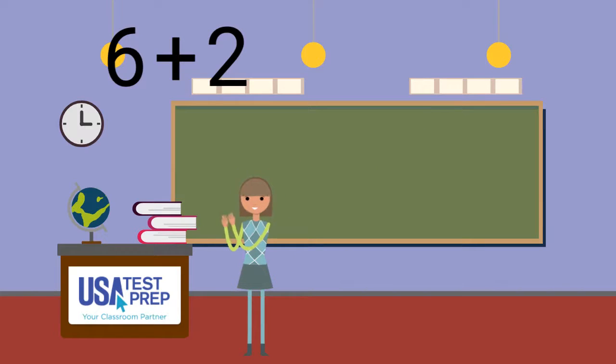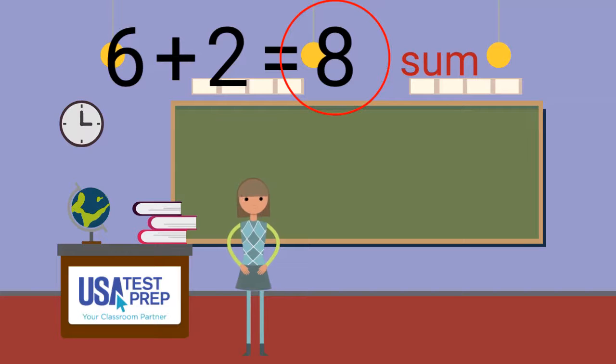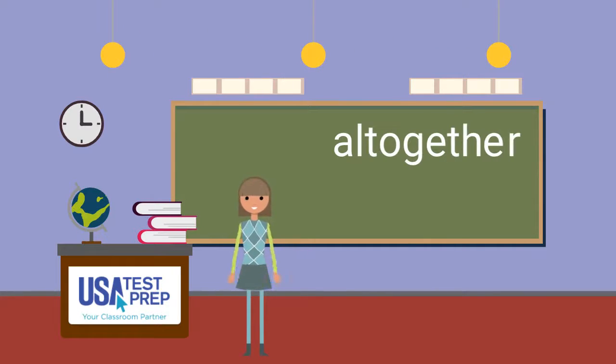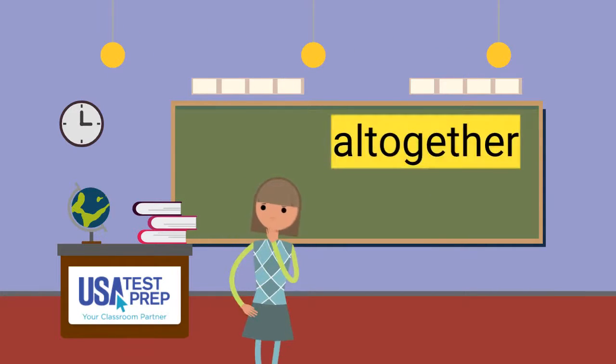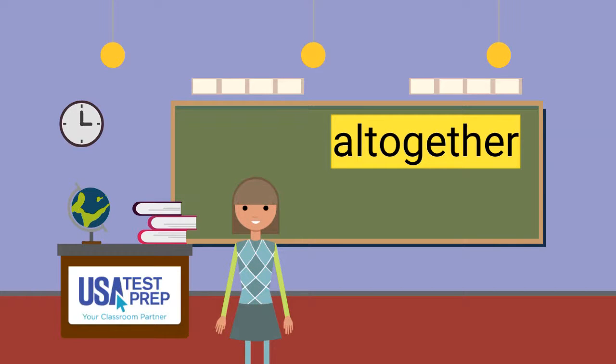We can add groups to find a sum. When finding a sum, we are finding out how many things there are all together. Can you say all together? Perfection!